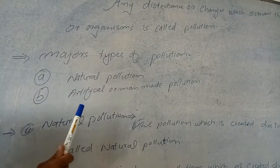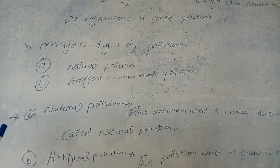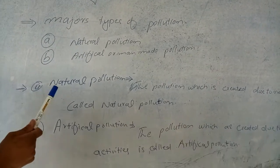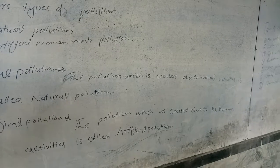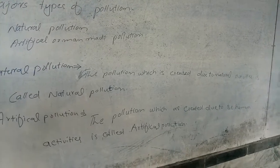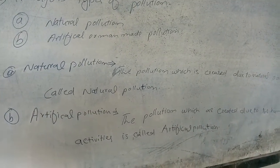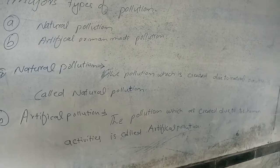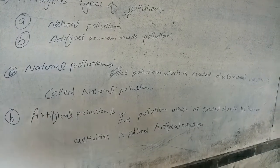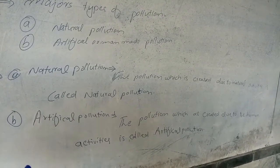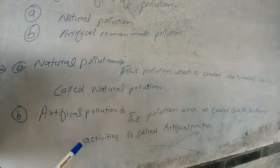The second is artificial pollution, also called man-made pollution. Coming toward natural pollution: the pollution which is created due to natural activities is called natural pollution. Examples of natural activities include earthquakes, tsunamis, and extreme flooding.